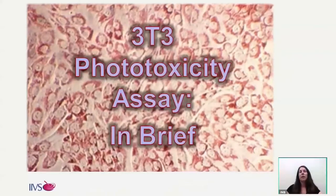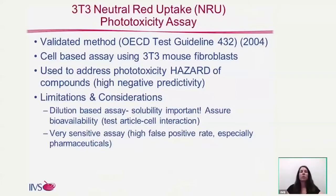I'm going to start now by talking about the 3T3 phototoxicity assay. In the background here, these are actually the 3T3 cells that have incorporated the NeutralRed uptake into their lysosomes. The 3T3 phototoxicity assay is a validated test method. It has an OECD test guideline number 432, which was validated and adopted in 2004. It's a cell-based assay that uses 3T3 mouse fibroblast, and it's used to address phototoxicity hazard of compounds. This assay has a high negative predictivity — if you get a negative result, it's generally regarded as not having potential for phototoxicity.